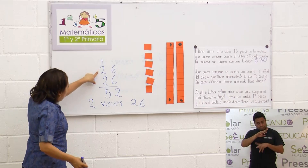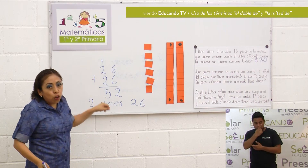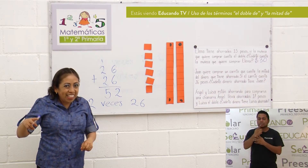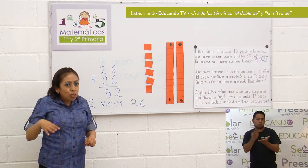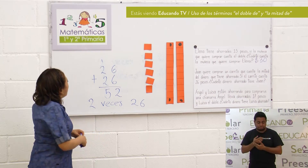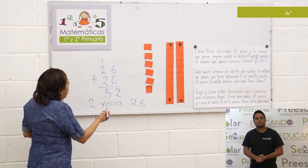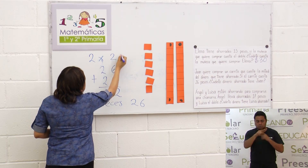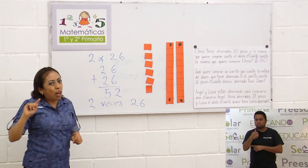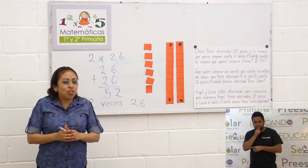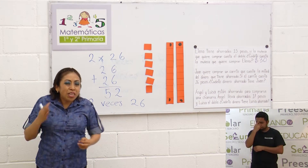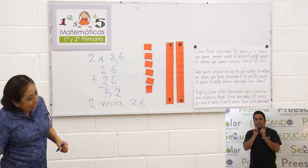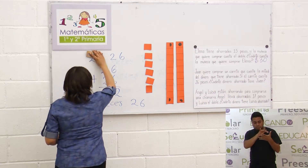Fíjate cómo podemos combinar el material concreto con una operación, o solo hacer la operación. Aquí podríamos decir dos veces veintiséis — sumamos dos veces porque es el doble. Esto sería dos por veintiséis, pero todavía no llegamos a esos conocimientos. Vámonos poco a poco.